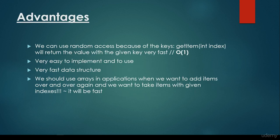So what are the advantages of arrays? We can use random access because of the keys. So we will see the getItem method or something like this. What's important is that we have to specify an index or a key and it will return the value with the given key very, very fast in constant time complexity. This is the so-called random access that we don't have to search for a given item.